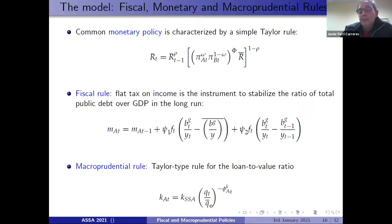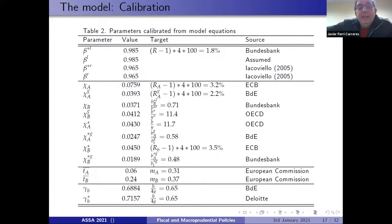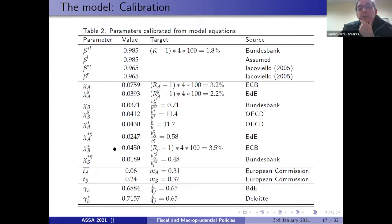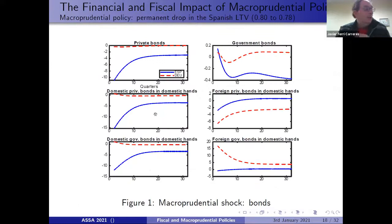The model is calibrated for Spain, which represents the periphery of the European Union, and Germany, which represents the core. The most important aspect of calibration is assigning values to the bond preference parameters in the utility function. We solve a system of equations to target different interest rates in the monetary union and different ratios of debt holdings over total debt.